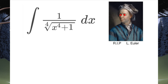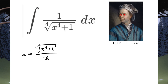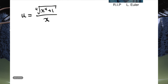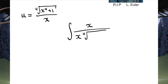Anyway, to begin we're going to be doing a u-substitution. I think that's the best way to approach this integral. And that substitution we're going to do is u equals the 4th root of x to the power 4 plus 1 over x. Now, we currently don't have that x in the integrand, so we need to make it. We need to introduce it. So, we're going to change our integral to the integral of x over x times the 4th root of x to the power 4 plus 1, dx.